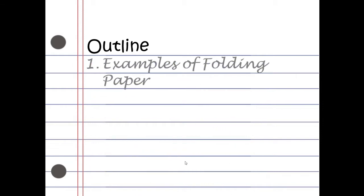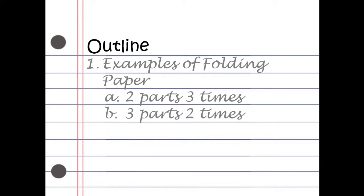I would like to share my outline so you'll know what I'll be talking about and in what order. First, I'll give examples of actually folding paper: folding into two parts and doing that for three times, into three parts and doing that for two times, and then trying to do it into five parts for seven times.